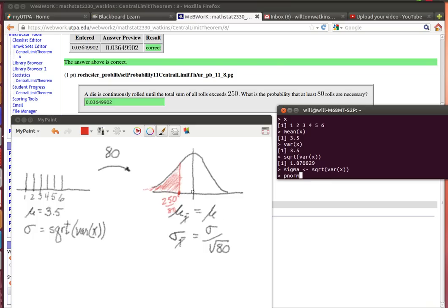So I just need to use the pNorm function. The pNorm of 250 divided by 80 in a distribution that has a mean of 3.5, which is the mean of whatever x is. I'll just ask R to recalculate that. And it has a standard deviation.